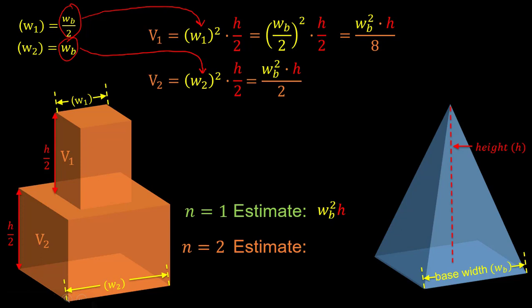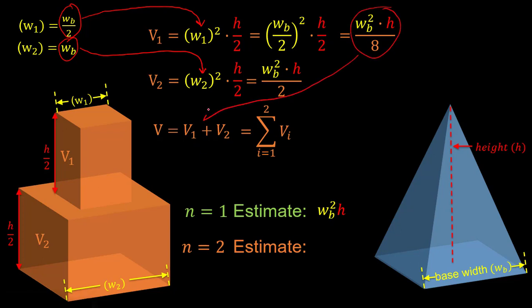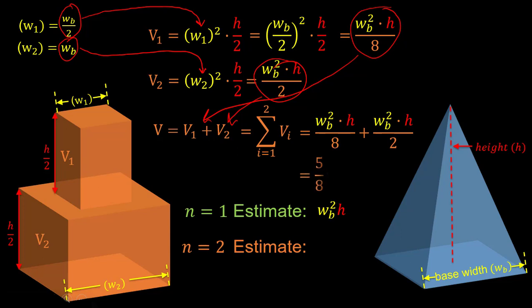Now that we have our top and bottom volumes, we find the total volume as v1 plus v2 — or in summation notation, the sum from i equals 1 to 2 of v sub i. Plugging in v sub 1 and v sub 2 and adding them together, we get 5 eighths times w sub b squared times h. This is our n equals 2 estimate. It is still an overestimate, but it's a little better than our n equals 1 estimate, so we're making progress.